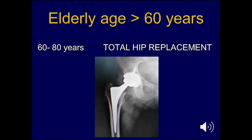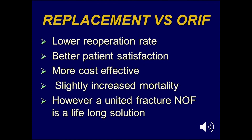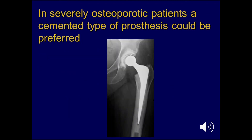People are now more inclined, especially in the age group between 60 and 80, to resort to total hip replacement. Bone quality is also a very important factor — the more osteoporotic the patient, the more inclined you are to replace rather than fix. The advantages of replacement include a lower re-operation rate, better patient satisfaction, and greater cost-effectiveness, although it carries a slightly increased mortality. Remember that a united fracture neck of femur is a lifelong solution, so never rule out fixation. In severely osteoporotic patients, a cemented prosthesis may be preferred.